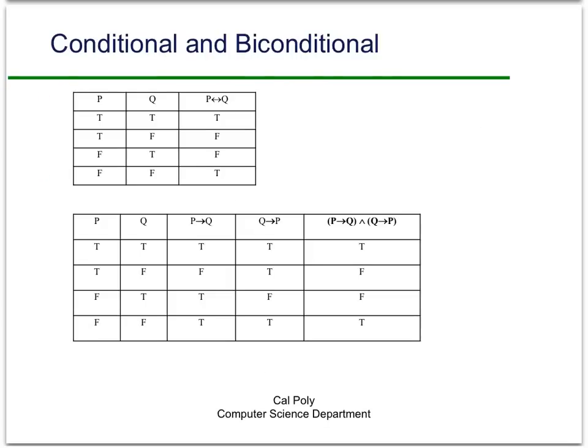The second important example is the relationship between the conditional and the biconditional. If we look at the truth table for the biconditional — that is, P if and only if Q — it's going to be true whenever P and Q have the same truth value. So if both P and Q are true, then P if and only if Q is true. If both P and Q are false, then P if and only if Q is true. Otherwise, when they have different values, P if and only if Q is false.